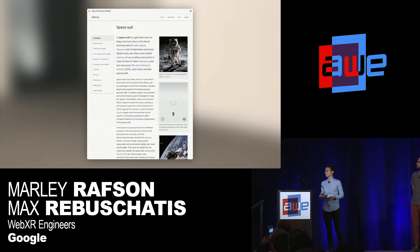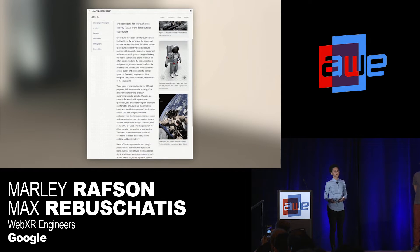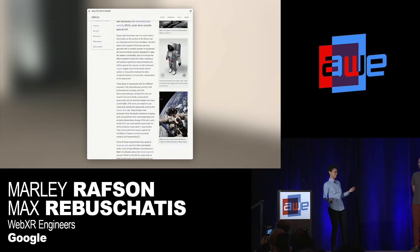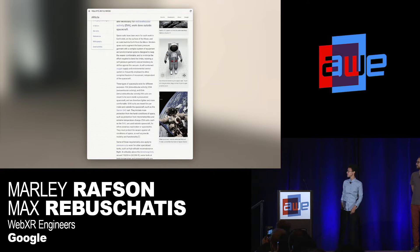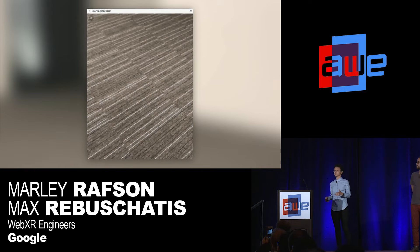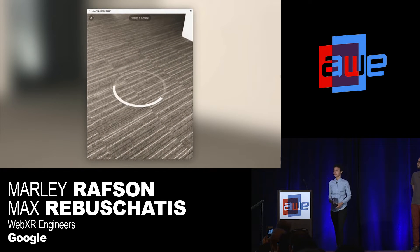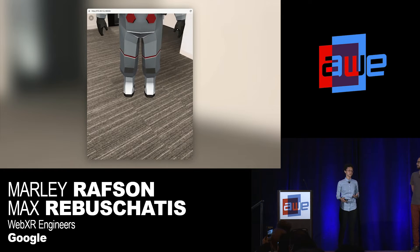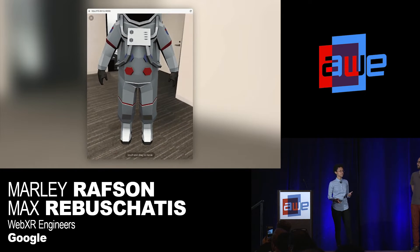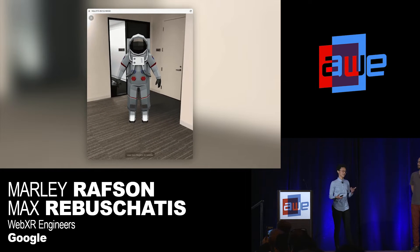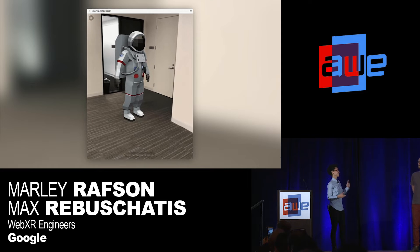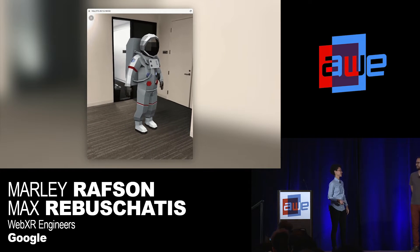Imagine you're on a website a lot like Wikipedia, trying to research about spacesuits, scrolling down, and you come across a 3D model. You ask: how tall is that? The height's in meters and I only know my height in feet. With augmented reality, you could seamlessly pop it into the space around you — you could actually see it, walk around it, get closer. It's a much more rich and immersive experience. After we released our prototypes on GitHub about a year ago, we learned a lot, and I'm excited to pass it over to Max to talk about what we just released.